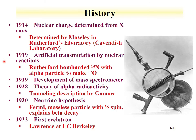In 1919, artificial transmutation by nuclear reactions was observed — Rutherford bombarded nitrogen-14 with an alpha particle to make oxygen-17. The nitrogen-14 came from the atmosphere and the alpha particle from a radioactive source, identifying that nuclear reactions could occur. Also in 1919, the first mass spectrometer was developed. In 1928, the theory of alpha radioactivity by Gamow utilized the concept of tunneling through a barrier to describe the decay. In 1930, Enrico Fermi proposed the neutrino hypothesis — a massless particle with a spin of one-half — to explain beta decay.